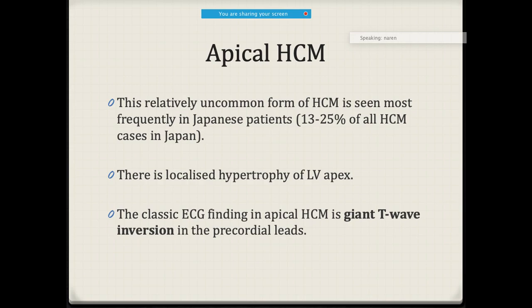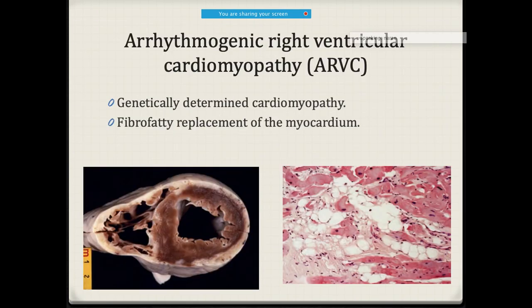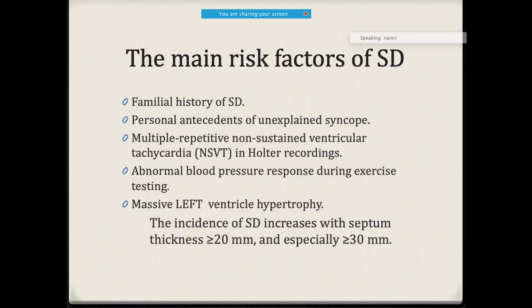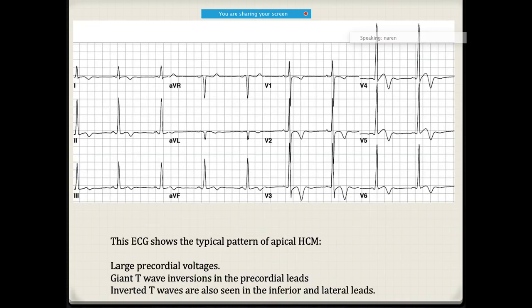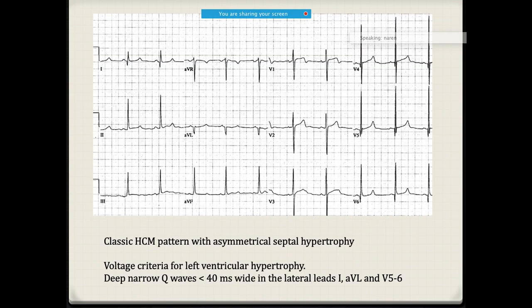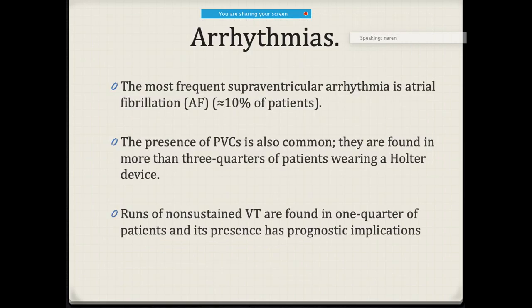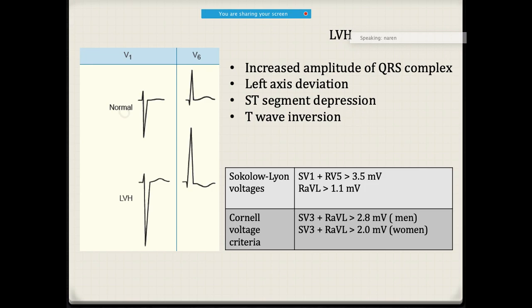Another form is hypertrophic cardiomyopathy localized to the apex. In apical hypertrophic cardiomyopathy, you may notice what is called a giant T wave inversion, present only in the apical leads. This has been localized mostly to the Japanese population. Atrial fibrillation is the most common SVT, present in nearly 10% of these patients.